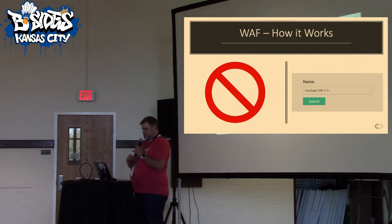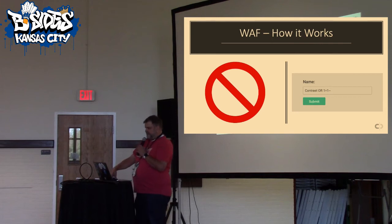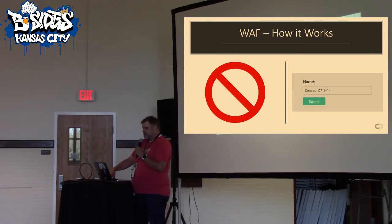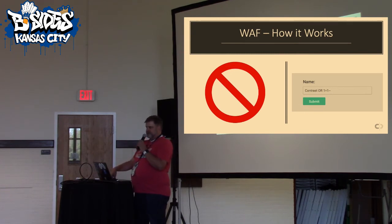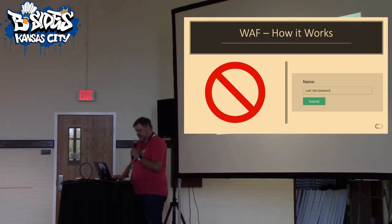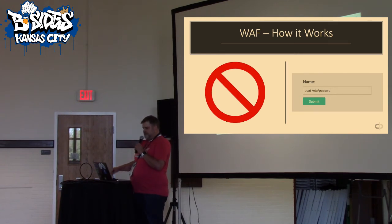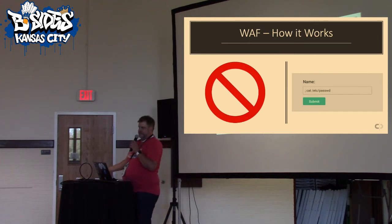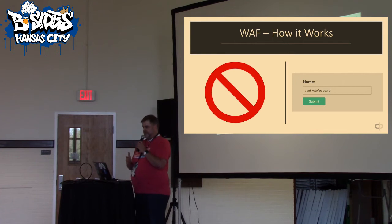So how does it actually work? Say I have an input box on my web page, and it expects a name. I'm going to submit something like 'contrast OR 1=1 --', which is a well-known SQL injection probe. The WAF is going to look at that, run some regular expressions, score it, and most likely block it. Similarly, for command injection — 'semicolon cat /etc/password' — the WAF is going to block it. However, does it ever result in an actual SQL query? Does it ever result in an actual system command? The WAF doesn't know that. It has no context — it's outside of the application.